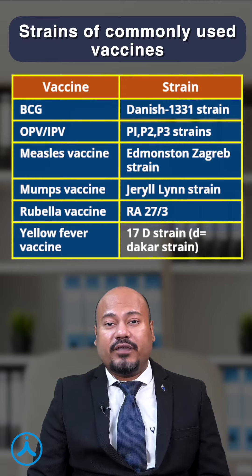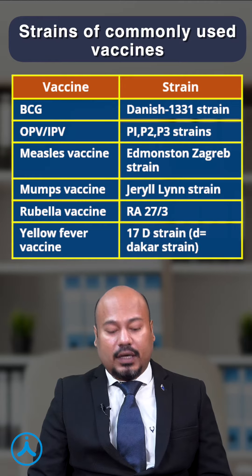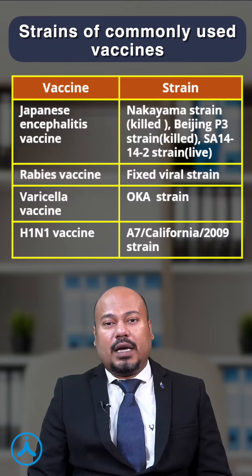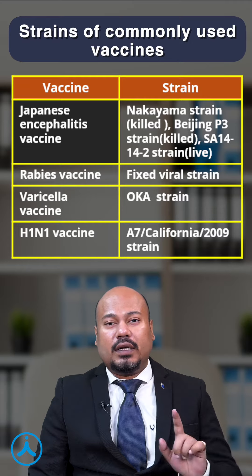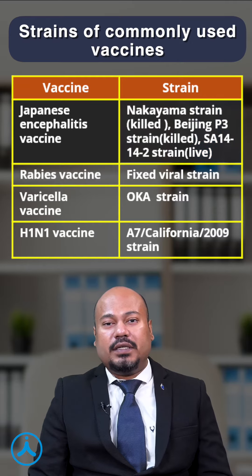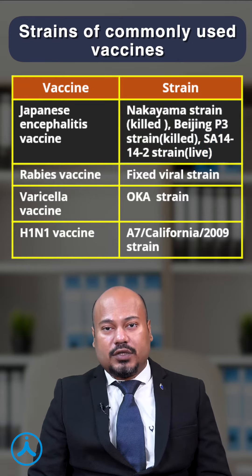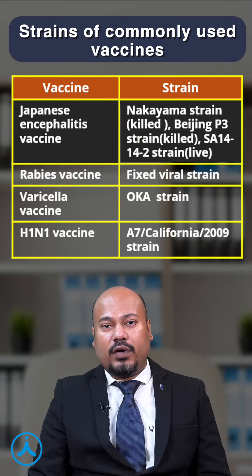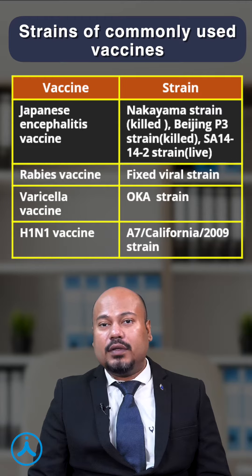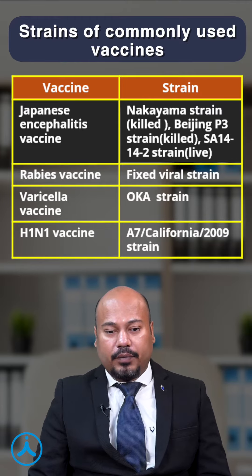The yellow fever vaccine uses the 17D or the Dakar strain. For the Japanese encephalitis vaccine, the Nakayama and the Beijing strains are the killed strains, whereas the SA14-14-2 is the live strain used for the national program.